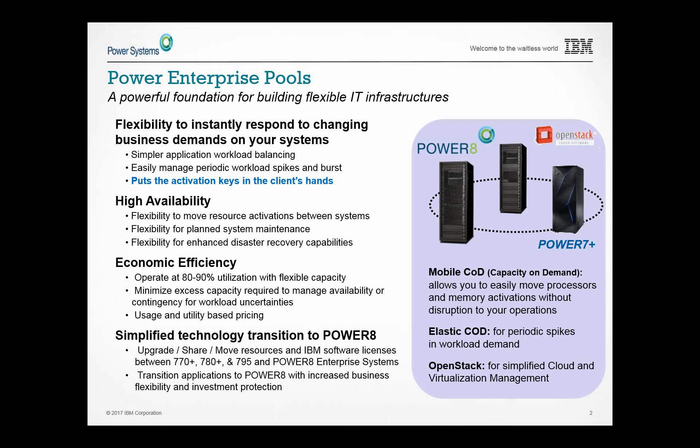No longer do you have to say system one needs so many processors, so much memory, and so many OS licenses. Instead, you look at a group or pool of systems and say how much capacity do I need across this pool and how much do I want in reserve — whether you're a retailer facing Black Friday, doing end-of-month processing, or handling disaster recovery. It's a big opportunity to save money on activations and software licensing.